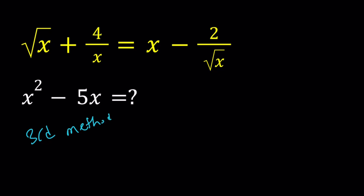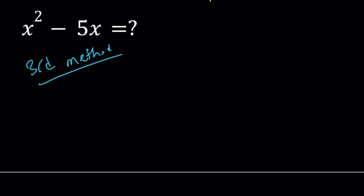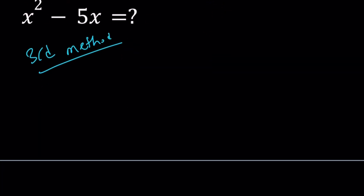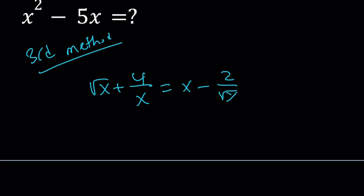So here's my third method. Let's make a common denominator, but let me rewrite the original problem first. So this is our equation. Let's go ahead and multiply both sides by square root of x.